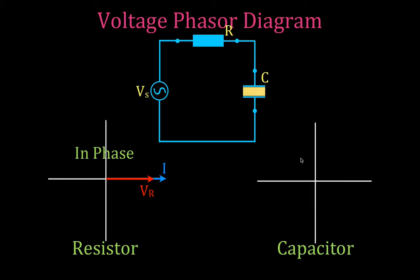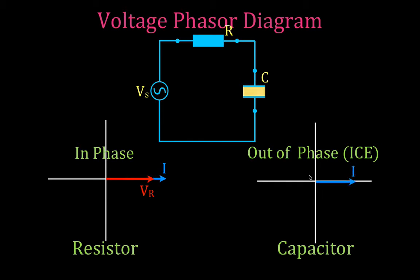For a purely capacitive circuit, the voltage and the current are out of phase. We use the mnemonic ICE, which reminds us that for capacitive circuits the current leads the voltage. We still draw the vector representing the current along the positive x-axis, but because they're out of phase by 90 degrees and the current leads the voltage by 90 degrees, we draw the vector representing the voltage across the capacitor along the negative y-axis.